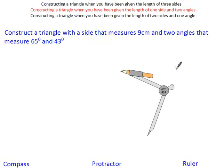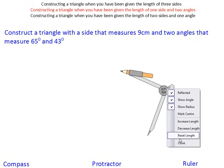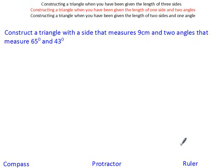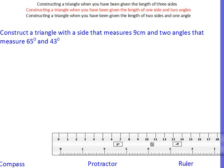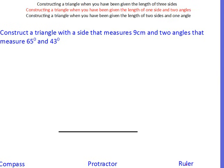The second triangle that we're going to construct is when you've been given the length of one side and two angles. Exactly the same as last time, you're going to get your ruler up to do the base, and that's 9 centimeters in this question. Get your pencil, draw a nice straight line of 9 centimeters, and then we're going to get our protractor out.